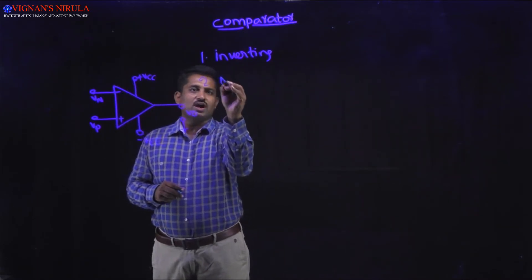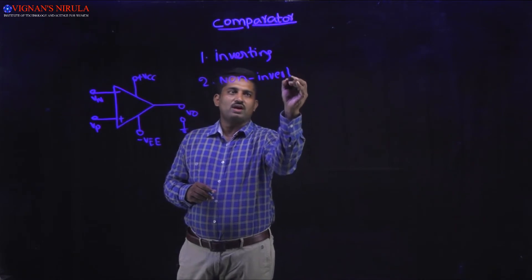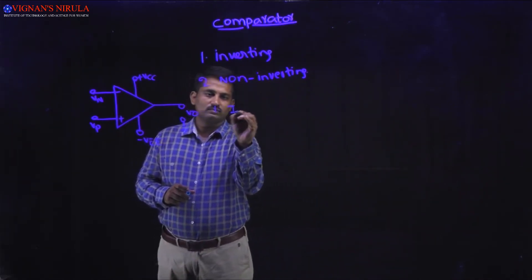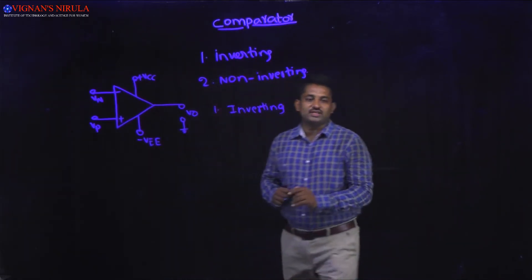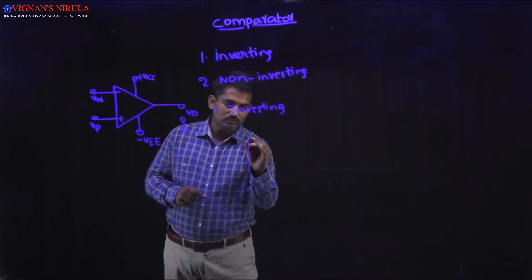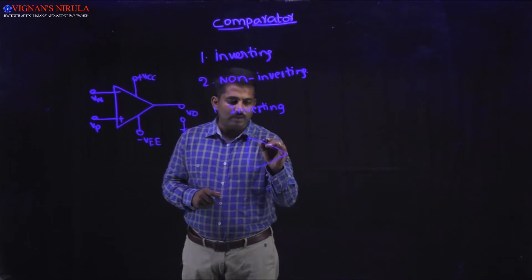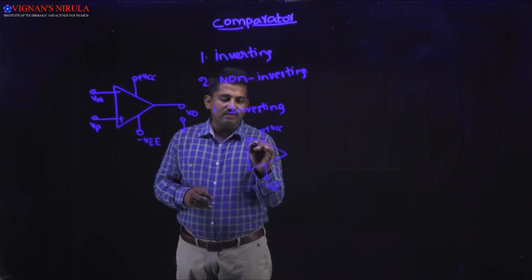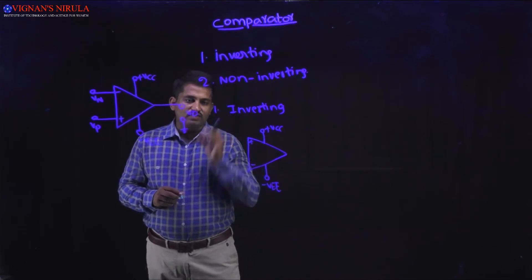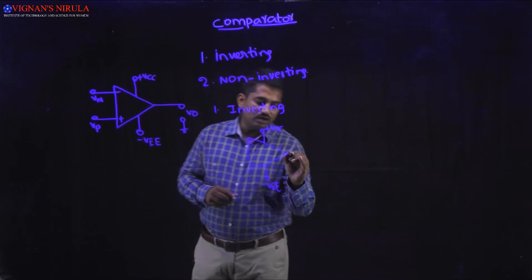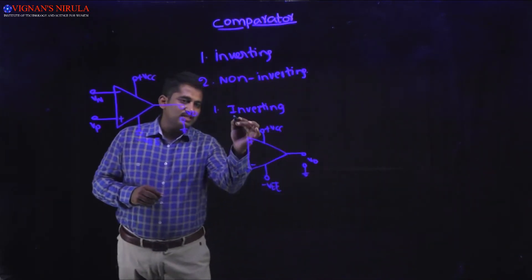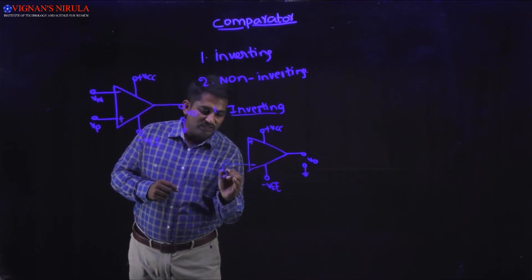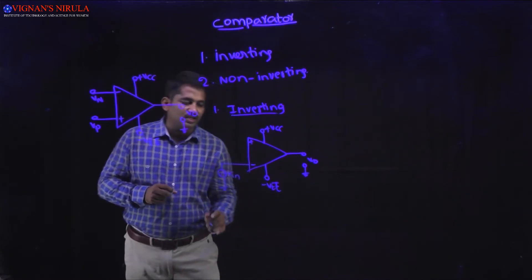Once we clearly understand the concept of the comparator, we can easily design regenerative comparators. The first type is the inverting comparator and the second is the non-inverting comparator. For the inverting comparator, we consider an op-amp in open loop configuration with DC supply voltages +Vcc and -Vee, two input terminals, and one output terminal V0. In the inverting comparator, the input Vin is applied at the inverting terminal.